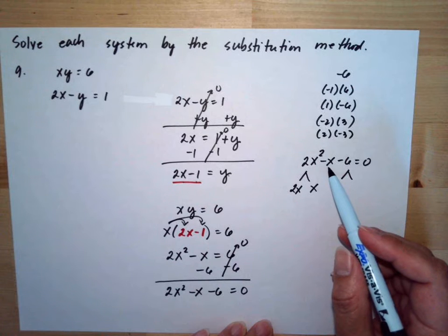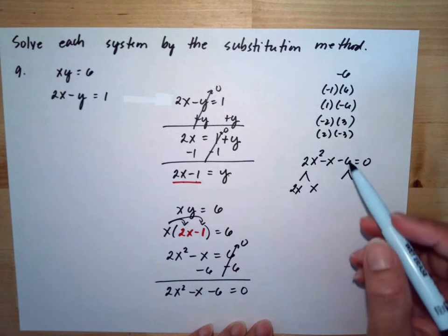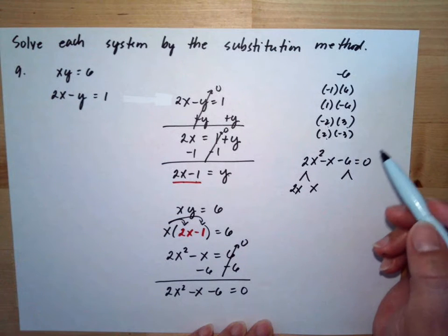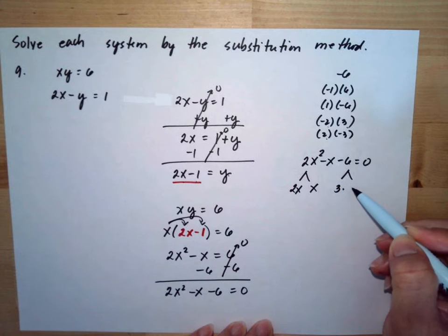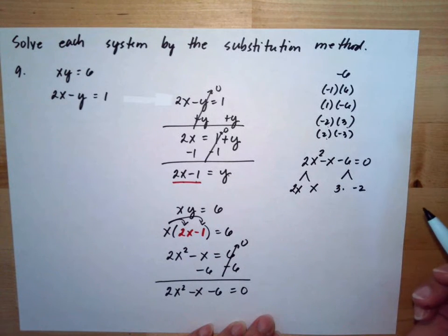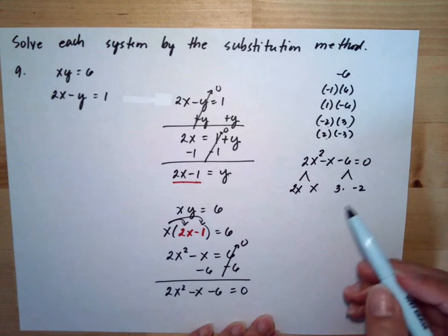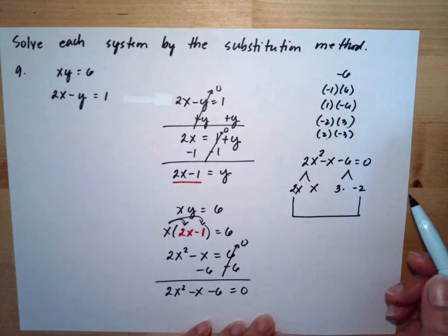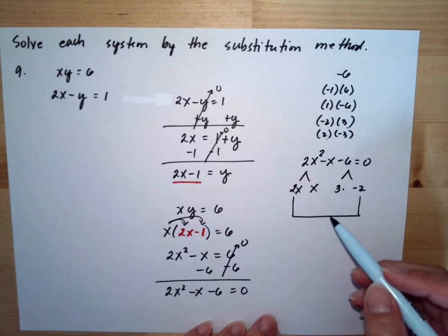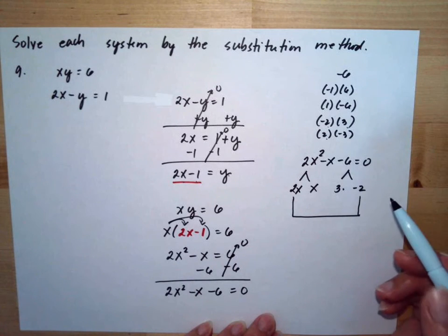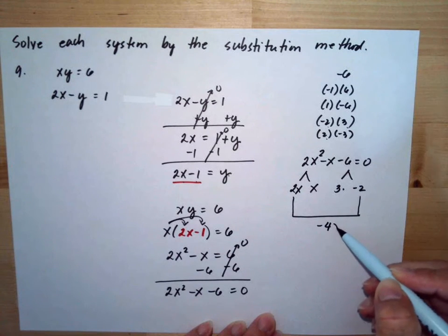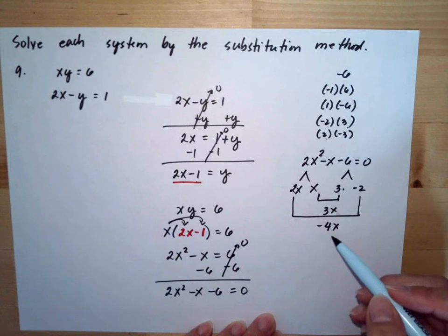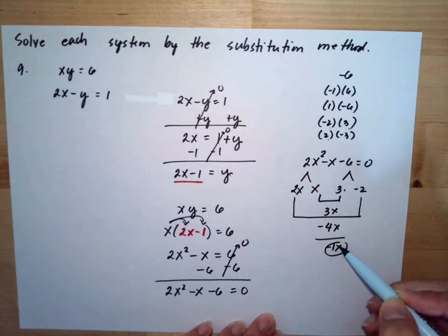We need to have a negative x at the middle term. I will use positive 3 on one side and negative 2 on the other side — this is trial and error, and you need to really check if you will get the middle term. Multiplying the outer factors: 2x multiplied by negative 2 is negative 4x, and x multiplied by 3 is 3x. Adding them together gives negative 1x, which is our middle term.